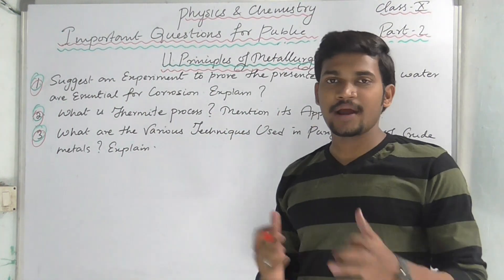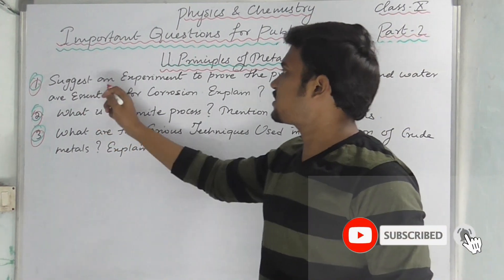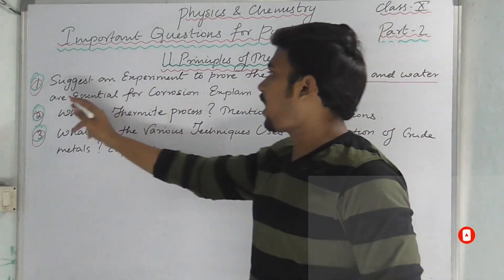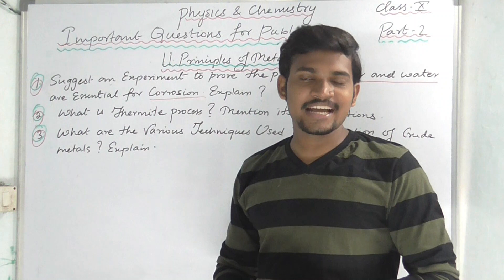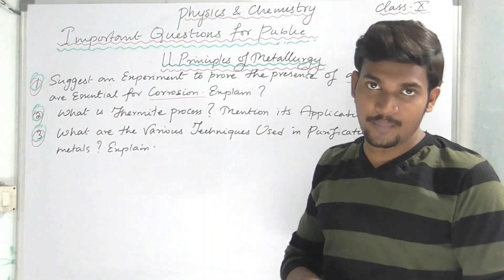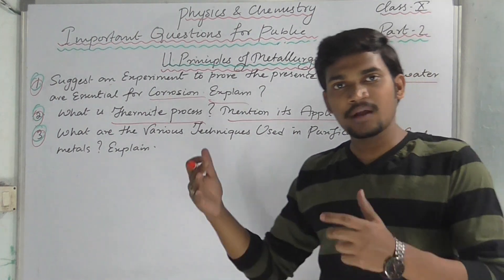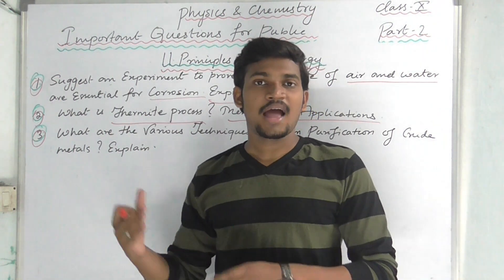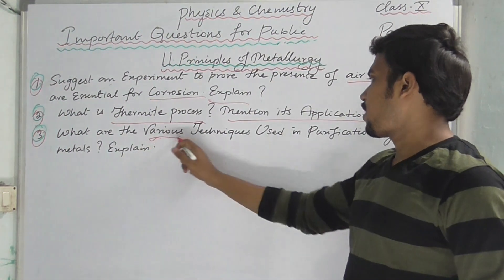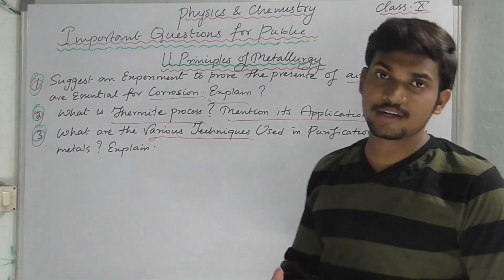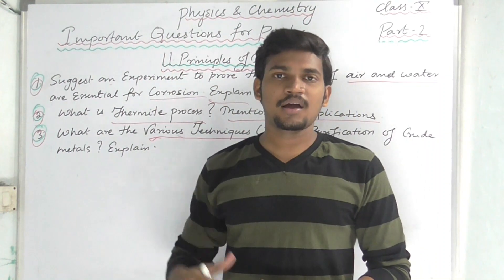The next important chapter is Principles of Metallurgy, with only three important four-mark questions. Suggest an experiment to prove that the presence of air and water are essential for corrosion. Discuss the thermite process and its characterization in daily life. What are the various techniques used in purification of crude metals? This is the 11th chapter.